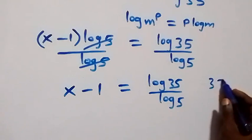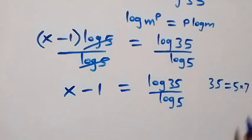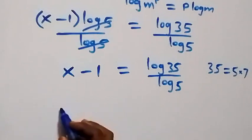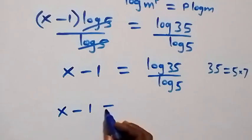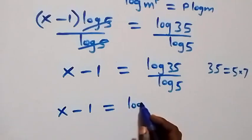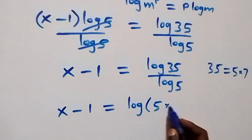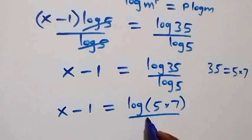Also, we can write 35 as 5 times 7. So this becomes x minus 1 equals log of 5 times 7, over log 5.